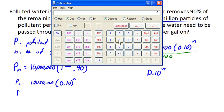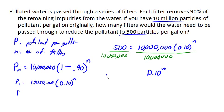We've got 500 divided by 10 million is 0.00005. Okay? So that's 0.00005 equals 0.10 to the N.